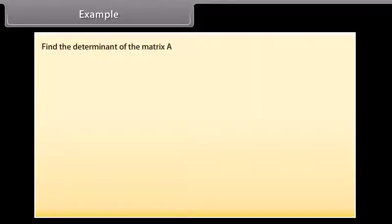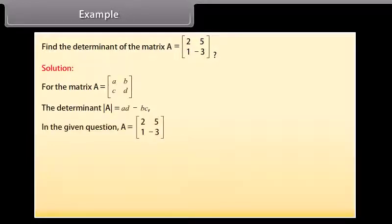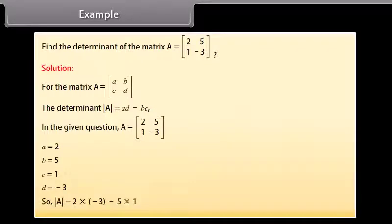Example: Find the determinant of matrix A with first row [2, 5] and second row [1, −3]. Solution: Using det(A) = AD − BC, we have A=2, B=5, C=1, D=−3. So det(A) = 2×(−3) − 5×1 = −6 − 5 = −11.